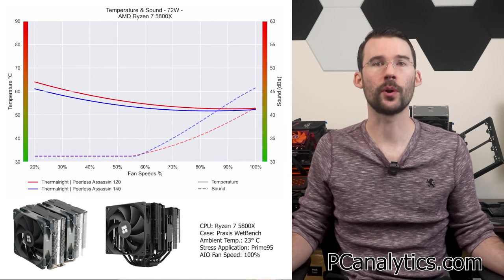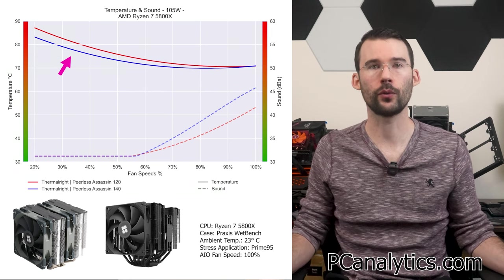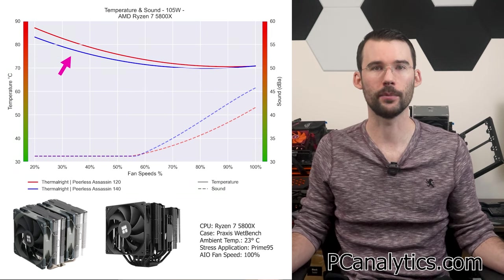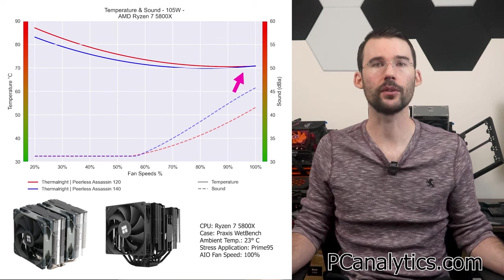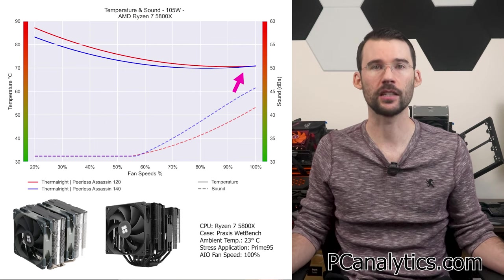As we increase the wattage to 105 watts, we can observe that the Peerless Assassin 140 runs slightly cooler at the lower RPMs, but this difference shrinks to minimal levels as the fans approach 100% fan speed.